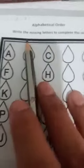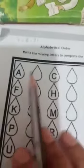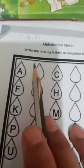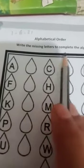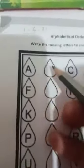Okay, now alphabetical order. You have read alphabet A B C D et cetera, so we are going to revise. Write the missing letters to complete the alphabet. Here you have blanks, here you have missing letters. A, what comes after A?